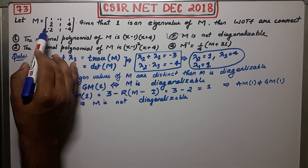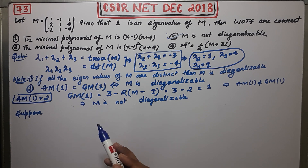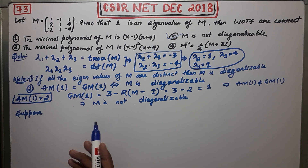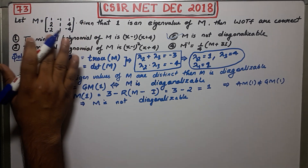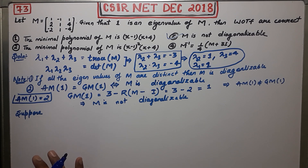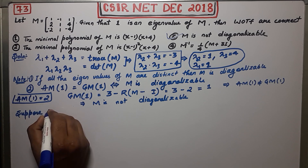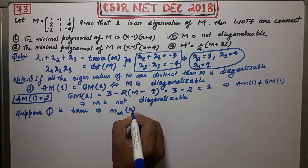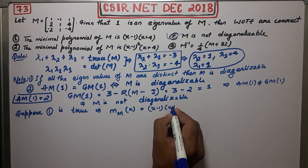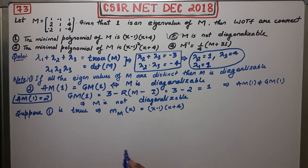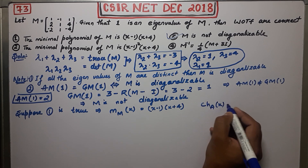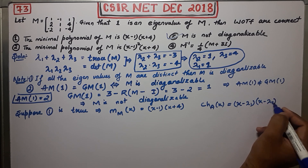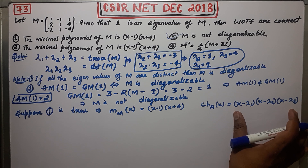Assuming option one is true, the minimal polynomial would be (x minus 1)(x plus 4). Now, from the eigenvalues you can write the characteristic polynomial as (x minus lambda 1)(x minus lambda 2)(x minus lambda 3). Since lambda 1 and lambda 2 are both equal to 1, this becomes (x minus 1) squared times (x minus lambda 3).